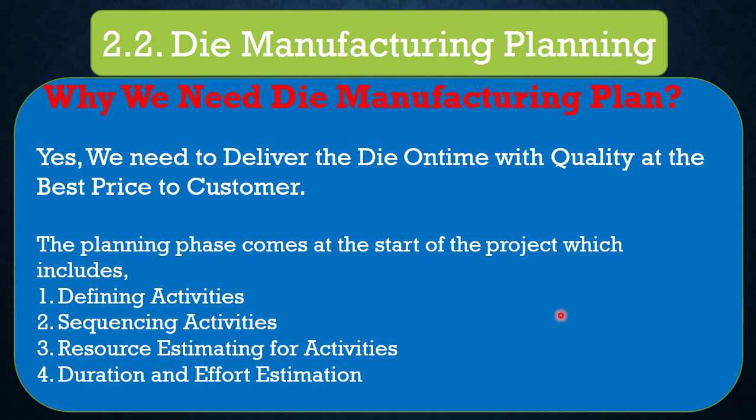Number three is resource estimating for activities. The estimation of the amount and type of resources required for each activity is done in this step. We should have a clear understanding of processes and resource allocation to manage efficiently. For example, if you have only one five-axis CNC machine for 3D machining, many resources will be shared, making accurate resource estimation very important.